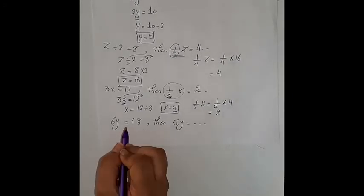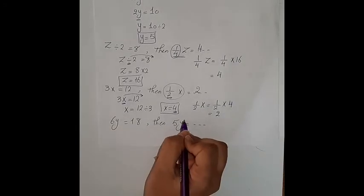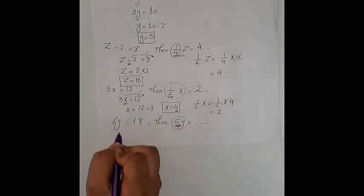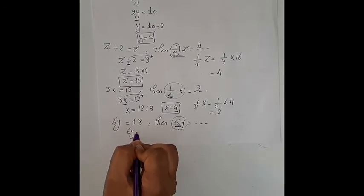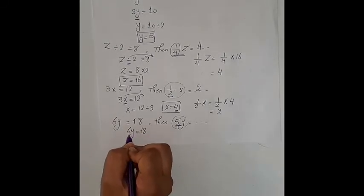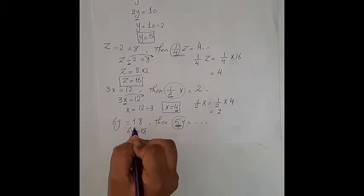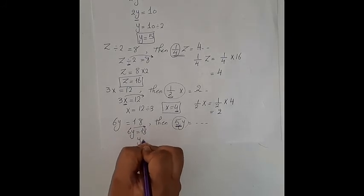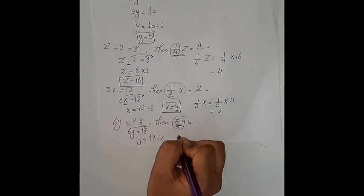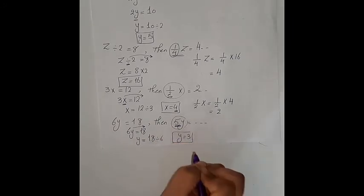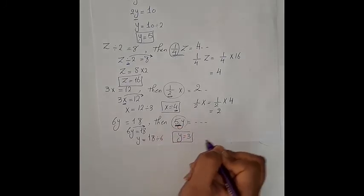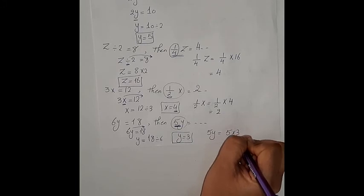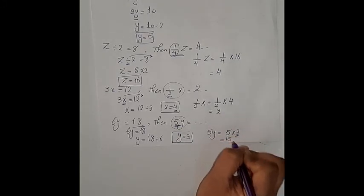Last question: 6y equals 18. We need the value of 5y. To get 5y I should first find the value of y. 6 is multiplied by y, so we move it to the next side with the inverse operation, which is divide. So y equals 18 divided by 6, giving y equals 3. Now 5y means 5 multiplied by the value of y, which is 3, so the result is 15.